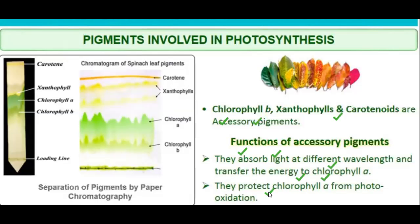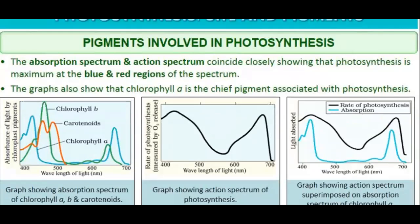Here we have the absorption spectrum and the action spectrum, which coincide closely, showing that photosynthesis is maximum in the blue and red regions of the spectrum. This is experimentally proved — blue and red wavelengths have the maximum capability of photosynthesizing. These graphs also show that chlorophyll a is the chief pigment, and the action spectra of chlorophyll a, xanthophylls, carotenoids, and chlorophyll b differ from each other.